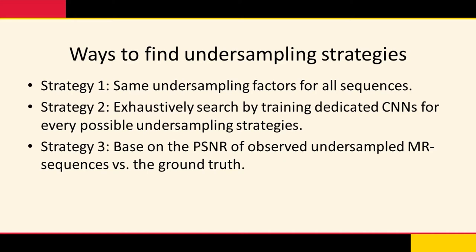We can also directly measure the PSNR of sequences degraded by different undersampling strategies and choose the strategy that yields the best PSNR — with the advantage that no model training is required. However, PSNR does not always accurately measure the information presented in sequences. For example, aliasing produced by undersampling affects PSNR disproportionately, yet CNNs can correct it reasonably well. Similarly, a combination of extremely undersampled and highly sampled sequences may yield lower overall PSNR, but CNNs can leverage inter-sequence similarities to reconstruct severely undersampled sequences well. Thus, the direct measurement approach can miss good undersampling strategies.